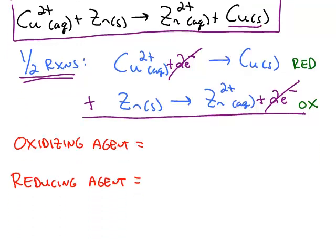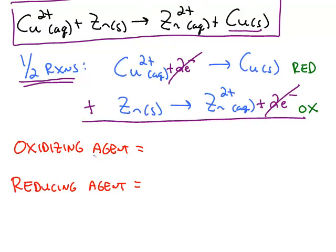Now we can classify what's what in terms of agents. When you see oxidizing agent, agent is another word for reactant. So what was the reactant that caused something else to be oxidized?